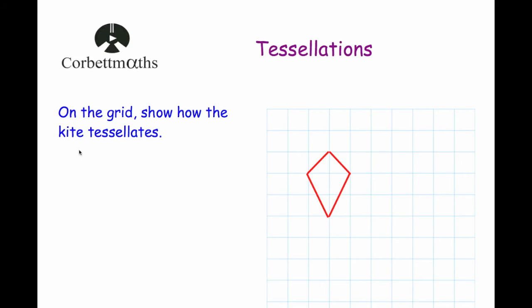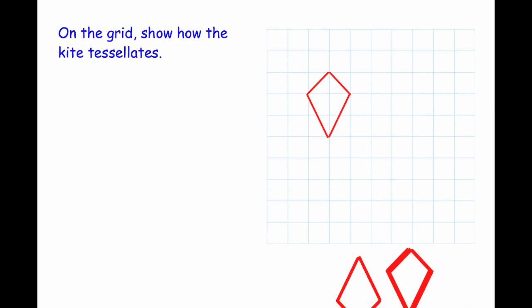Okay, so let's look at a typical question now. So you might be asked to show on a grid how a shape tessellates. So there might be a grid and one shape drawn for you, and you've got to draw that shape on the grid with no gaps between them, so they're fitting together perfectly with no spaces.